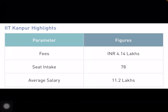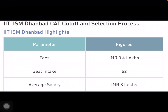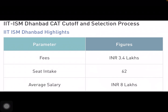For IIT Kanpur: fees are 4.14 lakhs — quite affordable — average salary is around 11 lakhs, and total seats are 78. For IIT ISM Dhanbad: fees are 3.4 lakhs, seat intake is 62, and average salary is 8 lakhs.